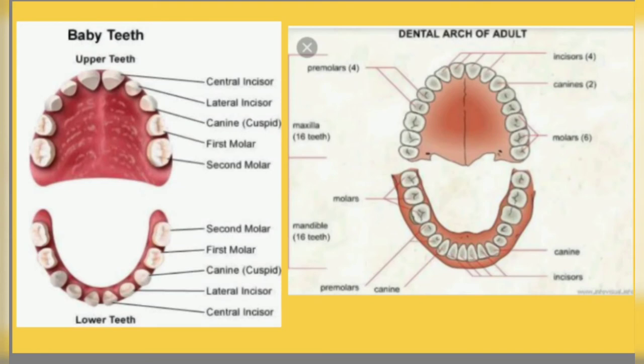So in total, kids have 10 teeth in the maxillary arch and 10 in the mandibular arch. That means we have 20 deciduous teeth. Adults have 16 in the maxillary arch and 16 in the mandibular arch, totaling 32 permanent teeth.